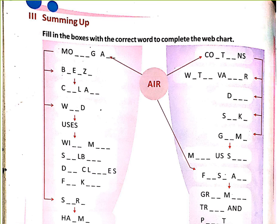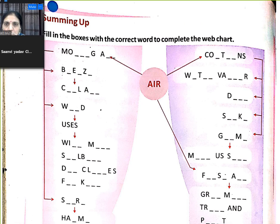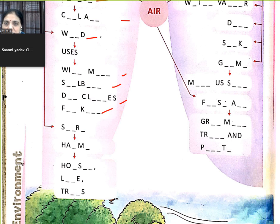Now, fill in the box with the correct word. Moving air: breeze, wind. Wind helps: sailboat, dry clothes, fly kite. Storm causes: harm to life, houses, and trees.